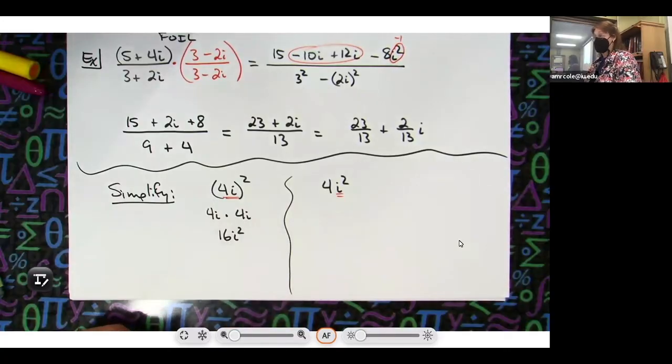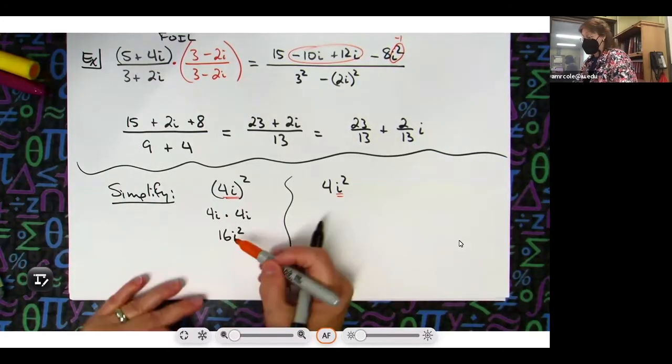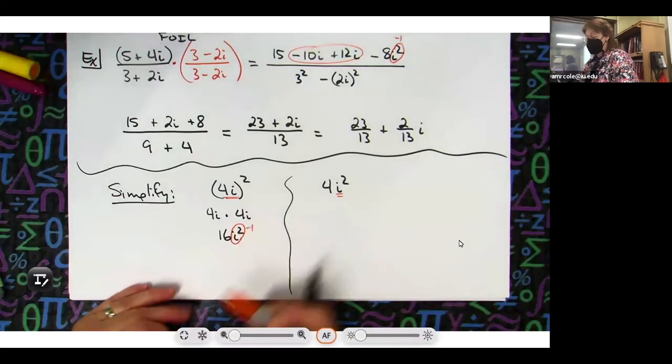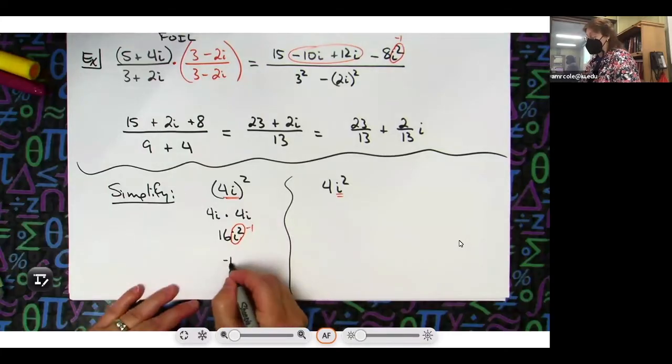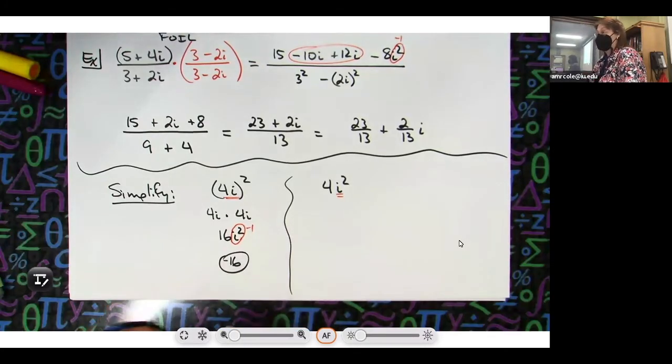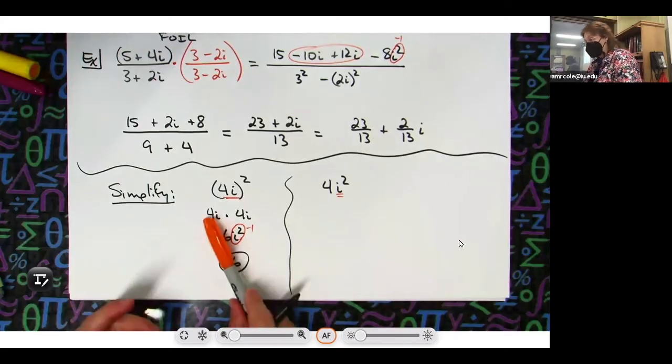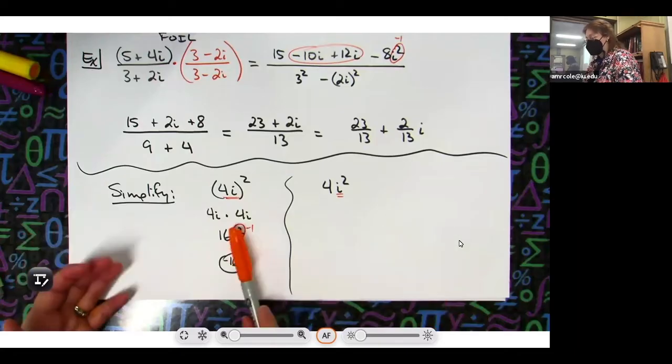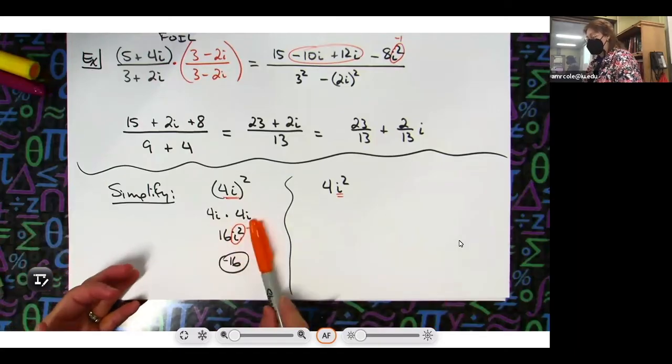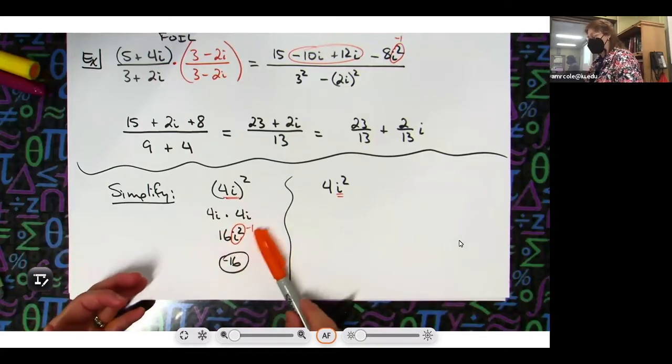Take the base, if you need to write it twice write it twice and then multiply. 4 times 4 is 16, i times i is i squared, that i squared is negative, so it's negative 16.